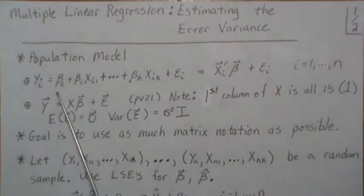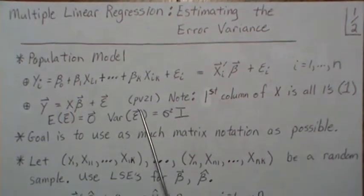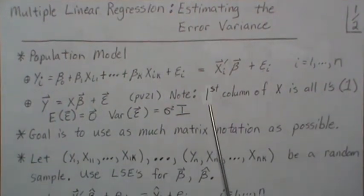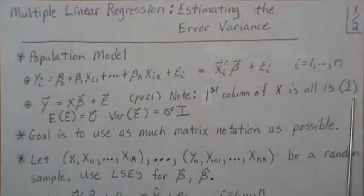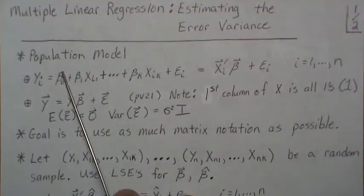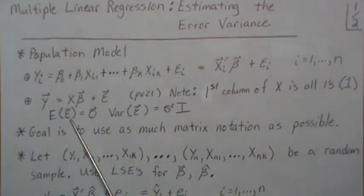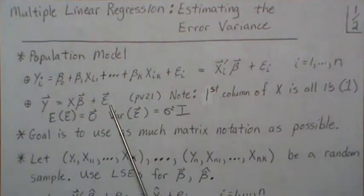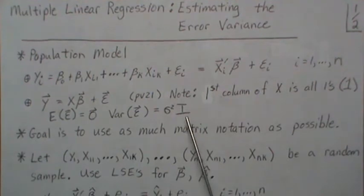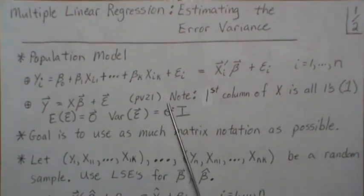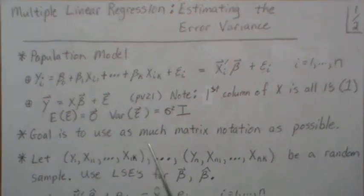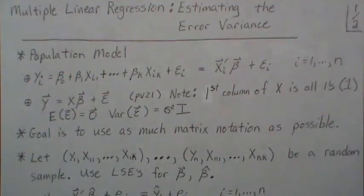In matrix notation, note from PV 21 that the first column of X is all ones, which has to do with the beta zero parameter. The expected value of our error is zero, and the covariance matrix is σ²I — and it's this σ² that we want to estimate.